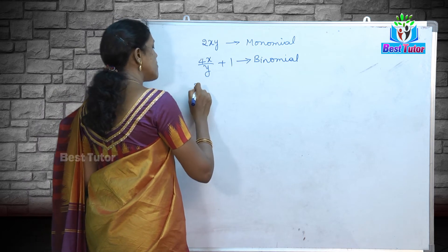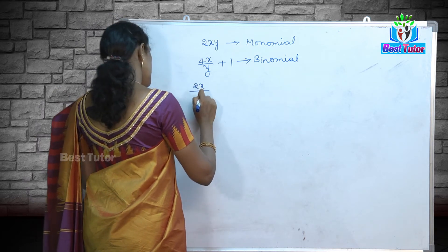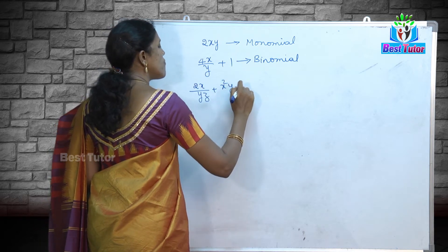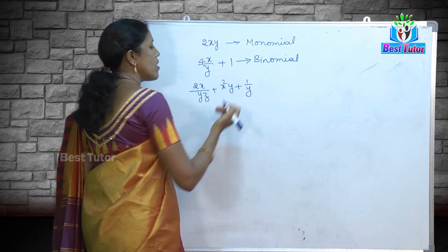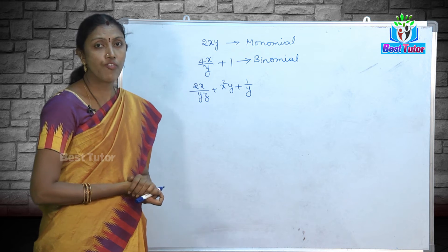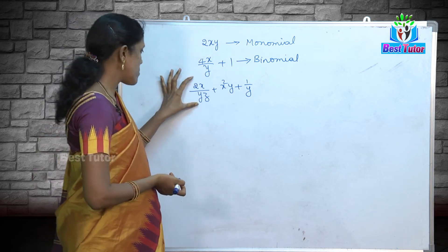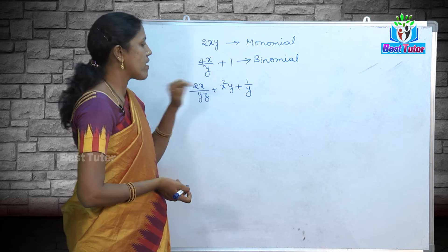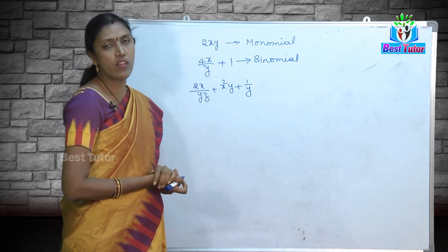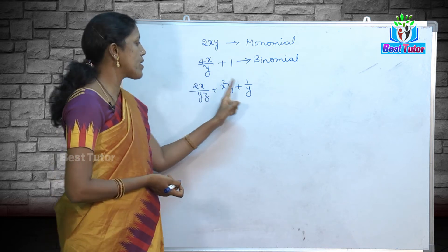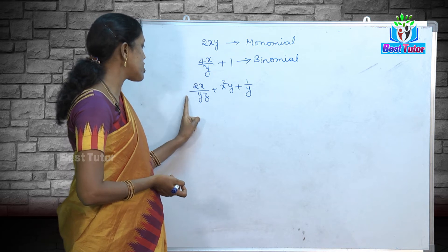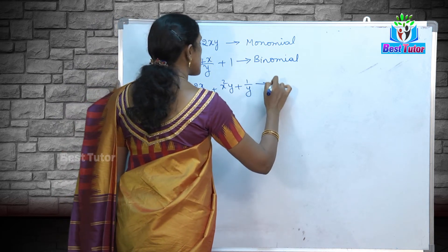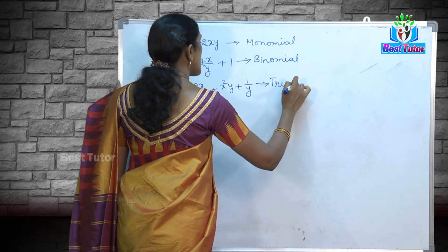If I have an algebraic expression which consists of 3 terms — for example, 2x/yz, x²y, and 1/y — this is a combination of 3 terms added together. Such an algebraic expression is called a trinomial.